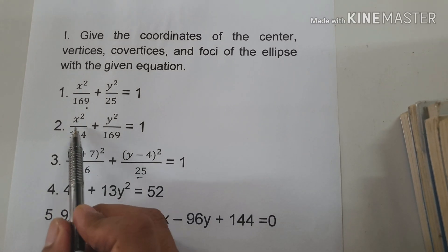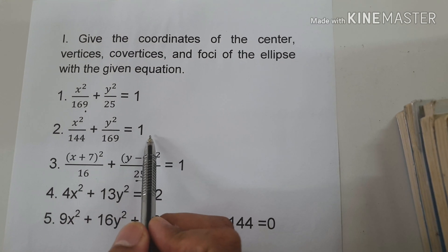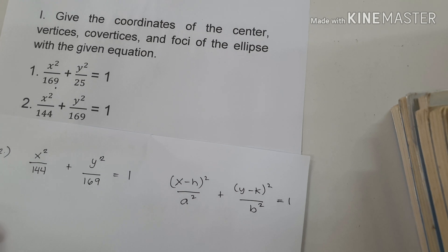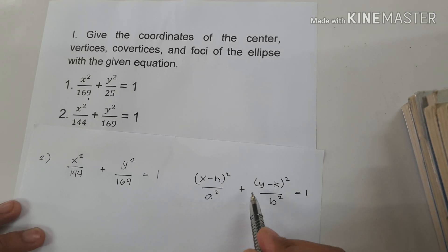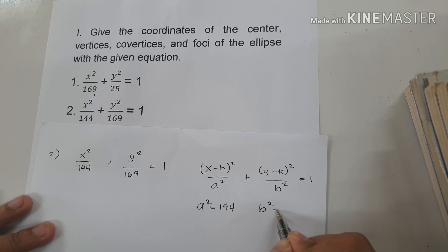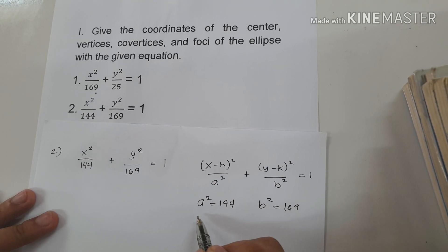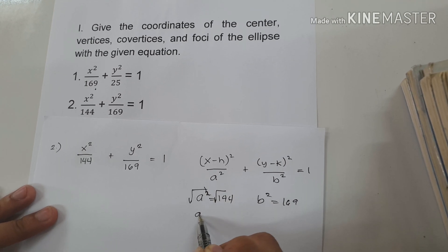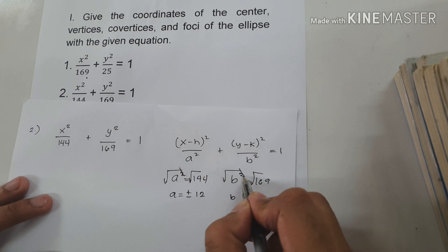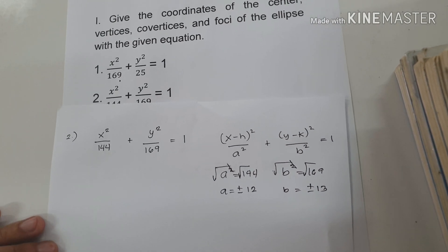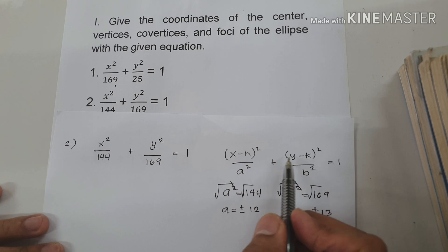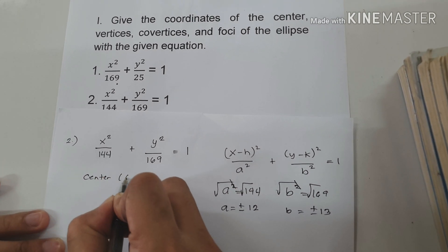On example number 2, we have x squared over 144 plus y squared over 169 equals 1. Both examples are already written in standard form: (x minus h) squared over a squared plus (y minus k) squared over b squared equals 1. The value of a squared is 144 and b squared is 169. Extracting the roots: a is positive and negative 12, and b is positive and negative 13. The center is (0, 0) since we don't have h and k.